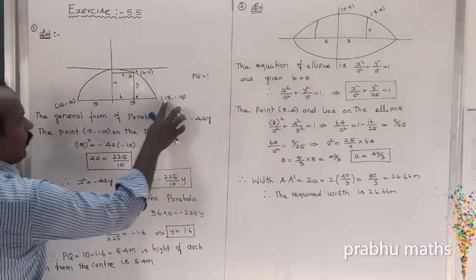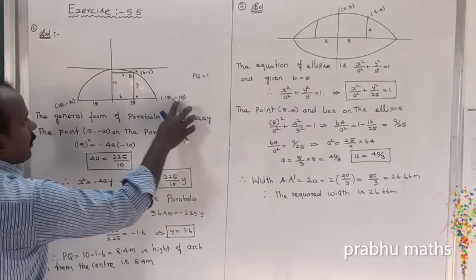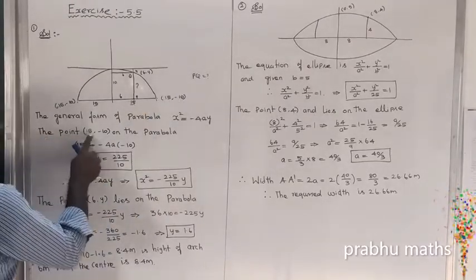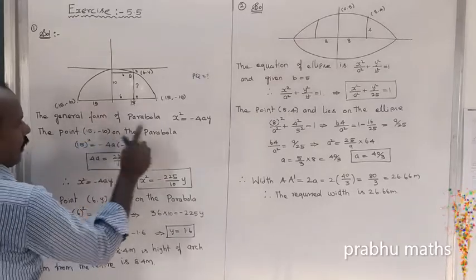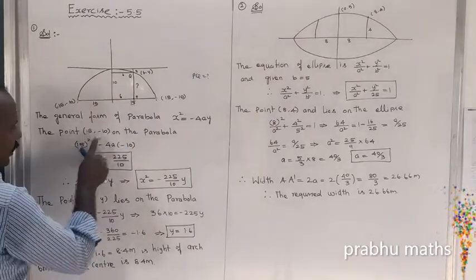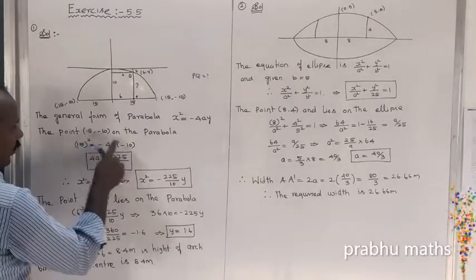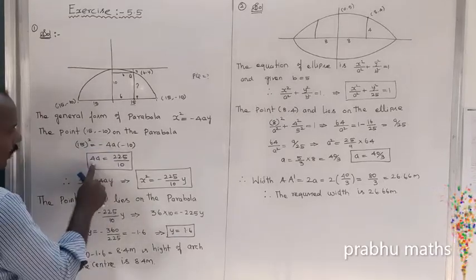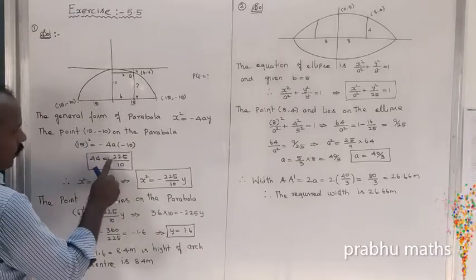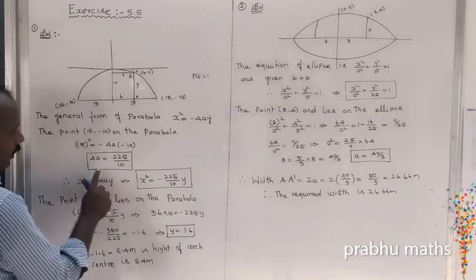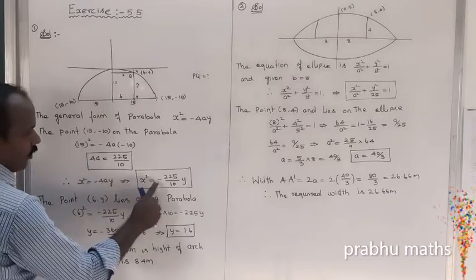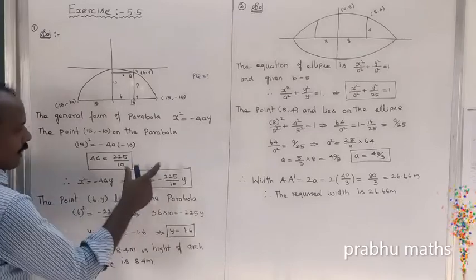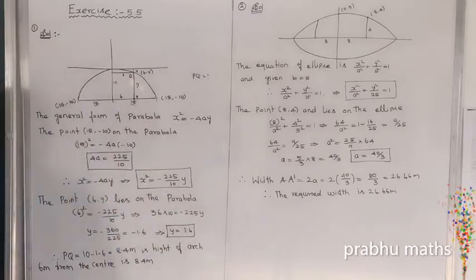The parabola passes through the point (15, minus 10). So x is replaced by 15 and y is replaced by minus 10. To find the value of 4A: 4A is equal to 225 divided by 10. Then we replace in the general form: x squared equals minus 225 divided by 10, into y.